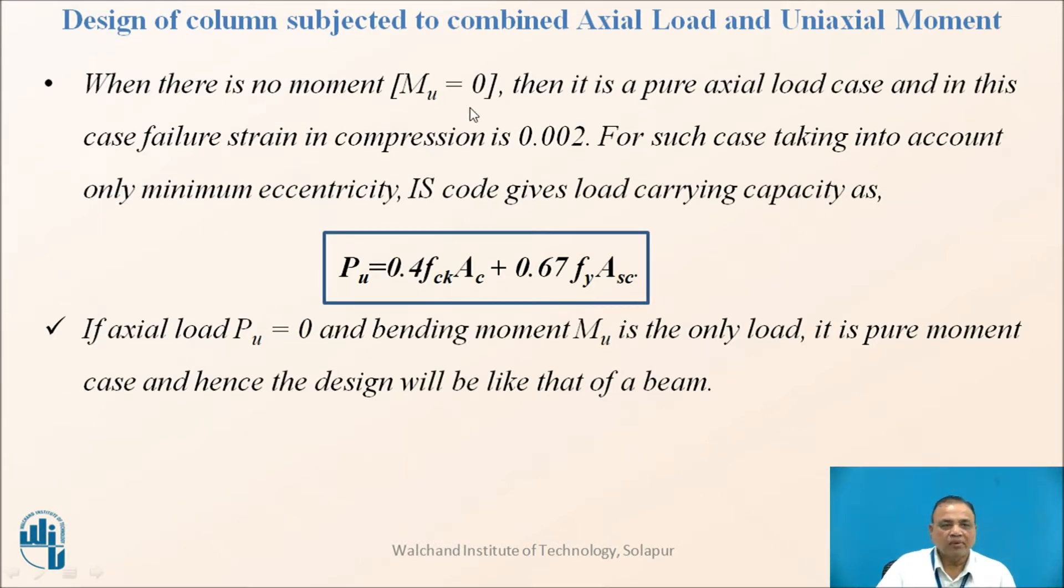When there is no moment, that is MU equals 0, then it is a pure axial load case. In this case, failure strain in compression is 0.002. For such case, taking into account only the minimum eccentricity, the IS456 has given the following equation for determination of PU, that is load carrying capacity: PU equals 0.4 FCK AC plus 0.67 FY ASC, area of concrete and area of longitudinal steel.